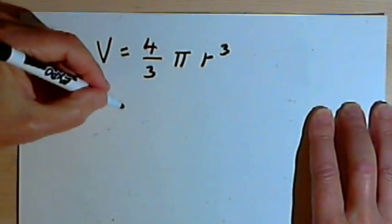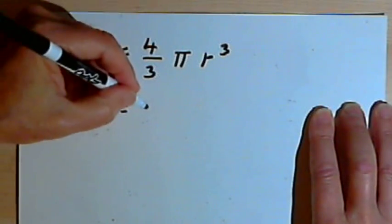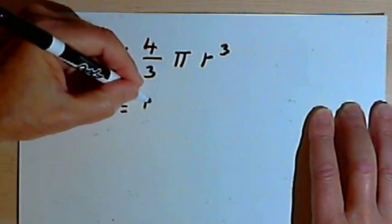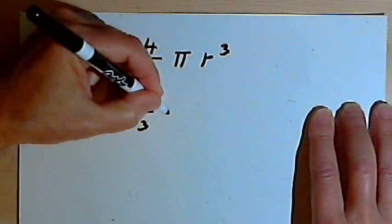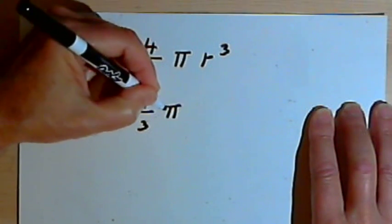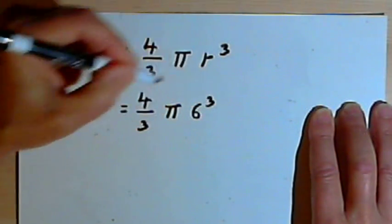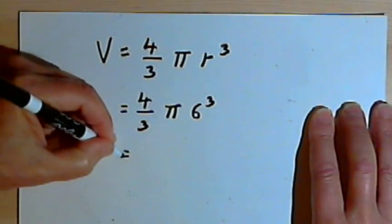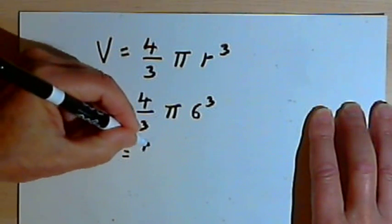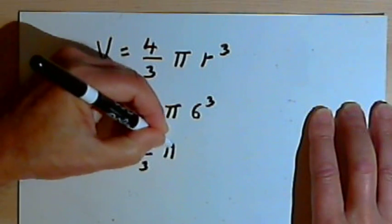Let's assume you've got a sphere and the radius is 6 inches. So we're going to have 4 thirds times pi times 6 to the third. 6 to the third, or 6 cubed, is 216.